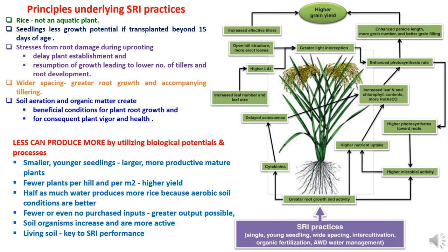Soil aeration and organic matter create beneficial conditions for plant root growth and consequent plant vigor and health. SRI is based on the belief that 'less can produce more' by utilizing biological potentials and processes — where smaller, younger seedlings become larger, more productive mature plants. Fewer plants per hill and per square meter will give higher yield when used with other SRI practices. Half as much water produces more rice because aerobic soil conditions are better, using intermittent wetting and drying practices.